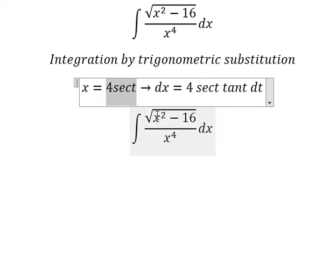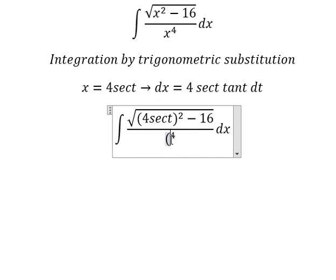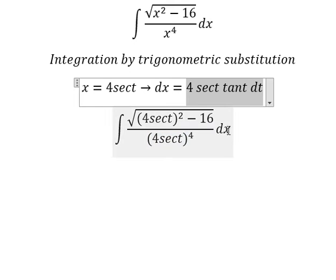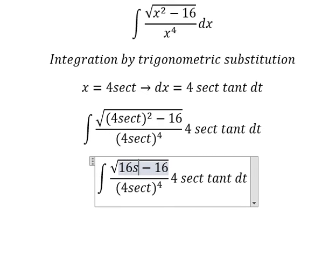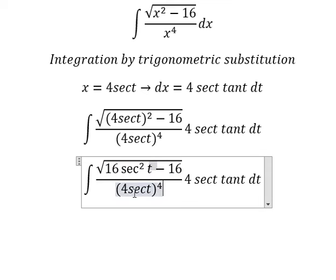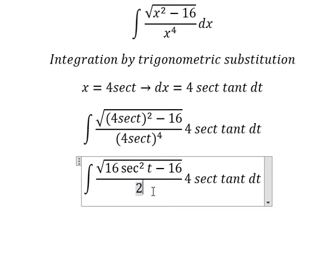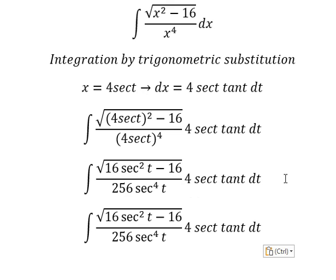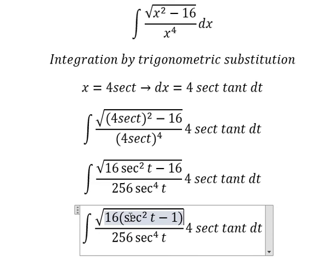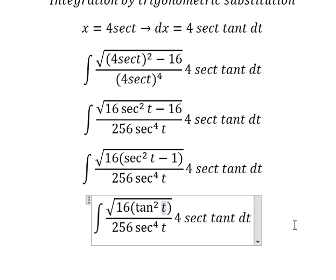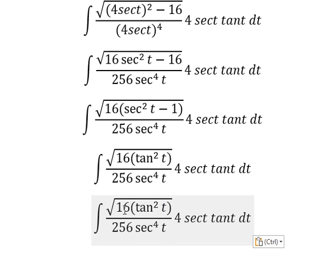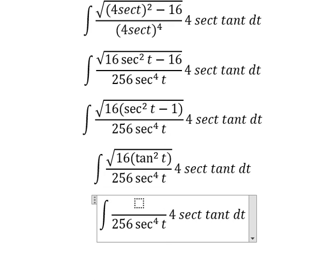I will substitute these expressions into the integral. The s term becomes 16 sec²(t), and we get 256 sec⁴(t). We can factorize again, and we have tan²(t). The square root of 16 tan²(t) gives us 4 tan(t).